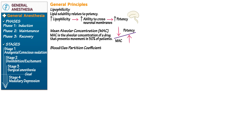Next, the blood-gas partition coefficient: it defines the solubility of a gas in blood and the rate of induction and recovery. It compares the amount of drug in 1 mL of blood to the amount of drug in 1 mL of alveolar gas.